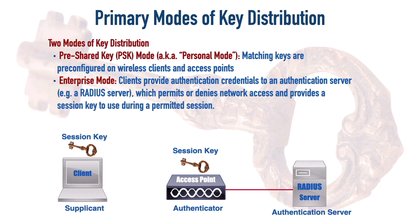There are several different methods that can be used to hand out those keys and to authenticate the client. Those different methods are called EAPs — Extensible Authentication Protocols. We're going to take a look at a few EAP examples in an upcoming video. For now, just realize that there are various ways that the RADIUS server, our authentication server, can authenticate the supplicant and give it keys for the duration of the session.